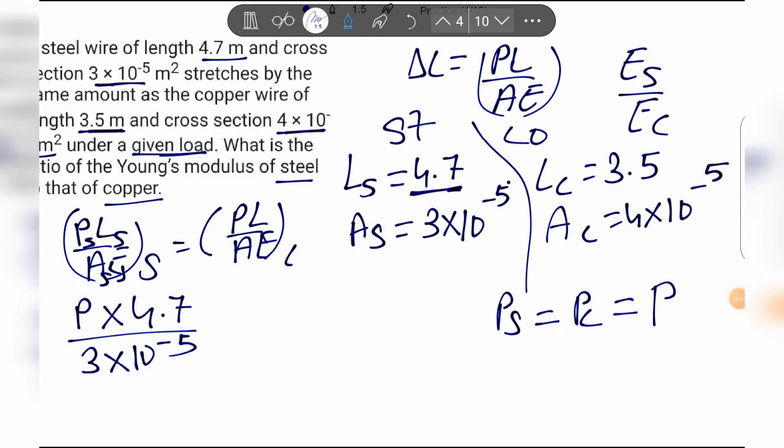This equals P into Lc, the length of copper which is 3.5 meters, divided by area of copper which is 4×10^-5, into Young's modulus of copper Ec.